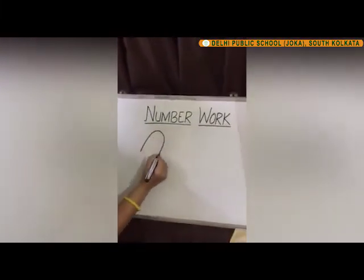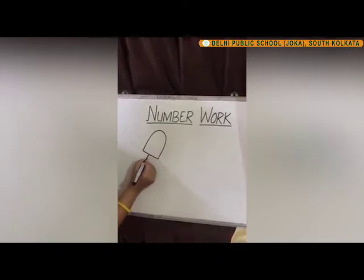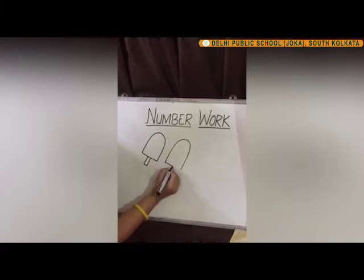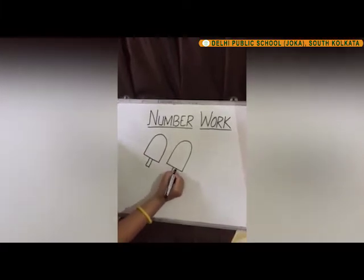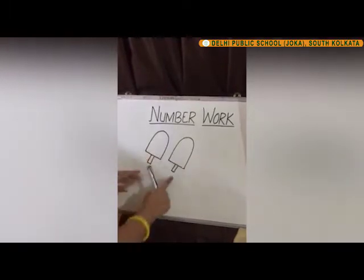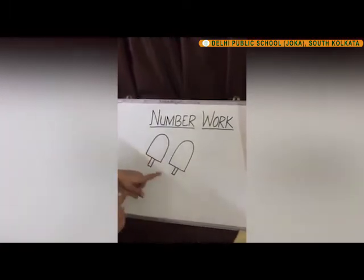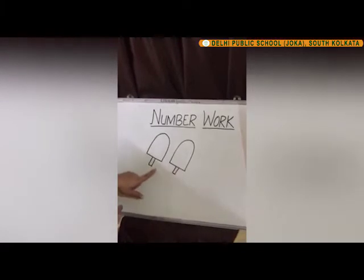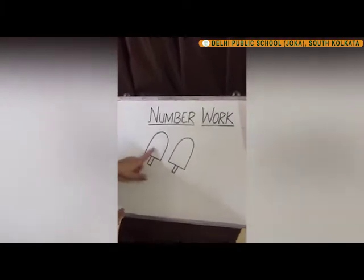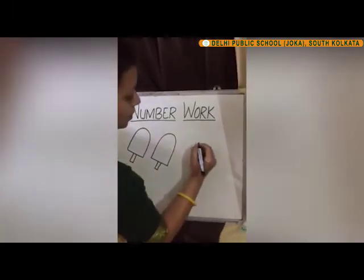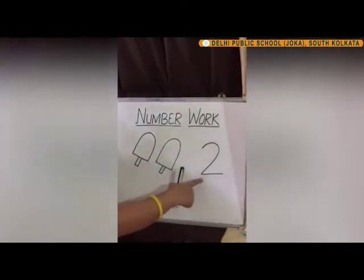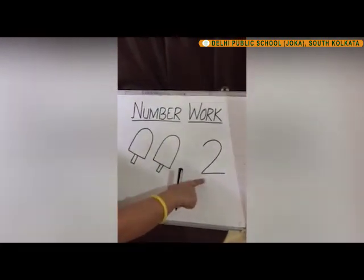Now see what I am drawing. Your favorite, isn't it? What is it? This is an ice cream. So how many ice creams are there? There are two ice creams. One, two. How many ice creams are there? Two ice creams. One, two. So which number is this? This is number two.